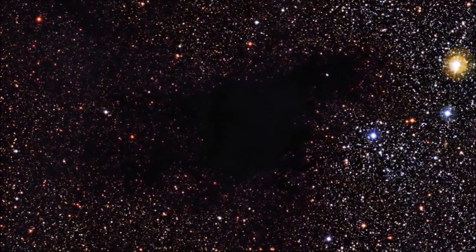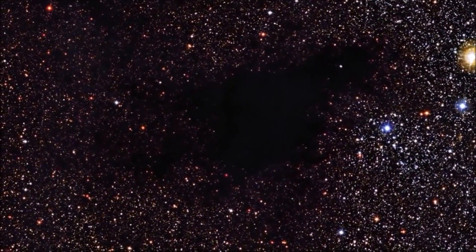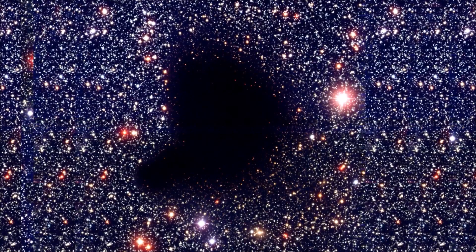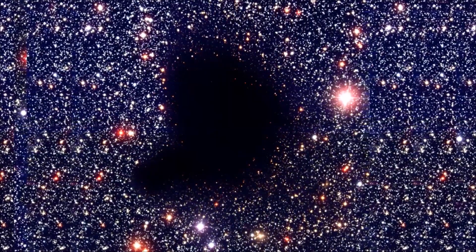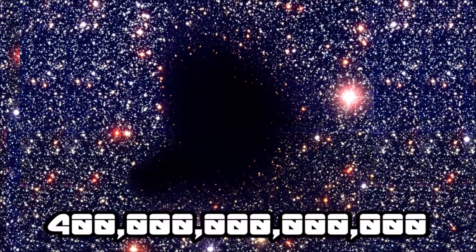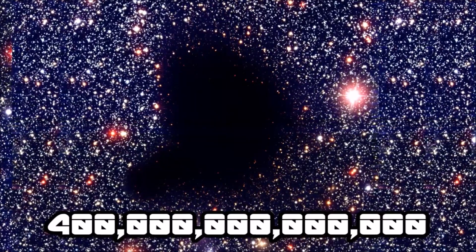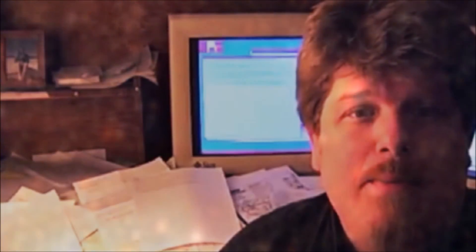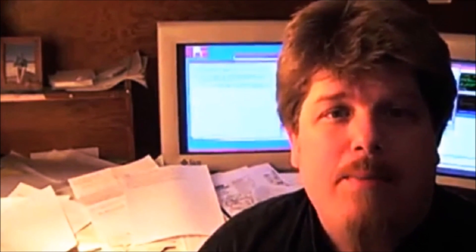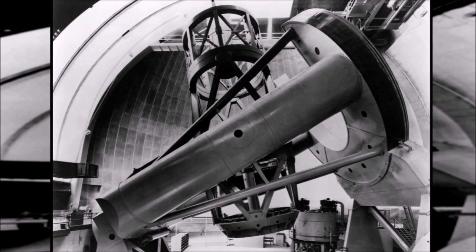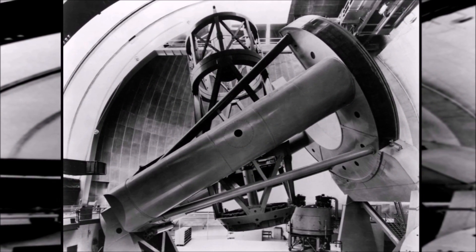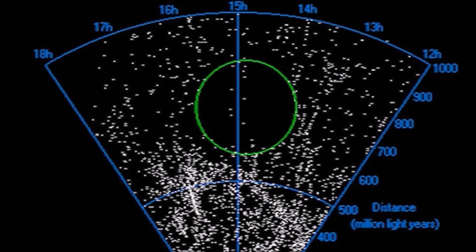The Bootes Void is 330 million light years in diameter. This means that in a 747 jumbo jet, it would take nearly 400 trillion years to cross the void one way. According to astronomer Greg Aldering, the void is so large that if the Milky Way were at its center, we wouldn't have even known there were other galaxies until the telescopes of the 1960s.